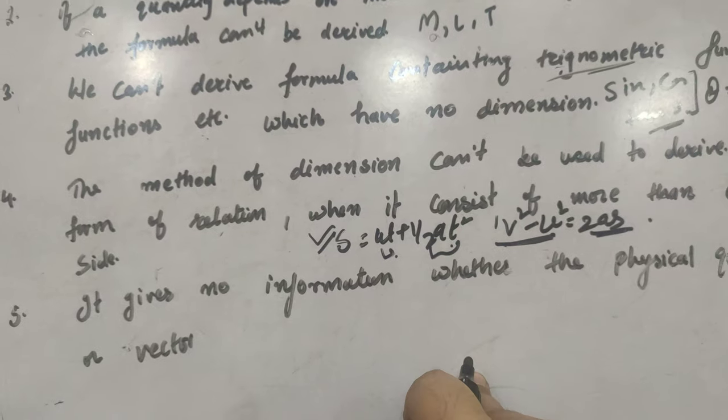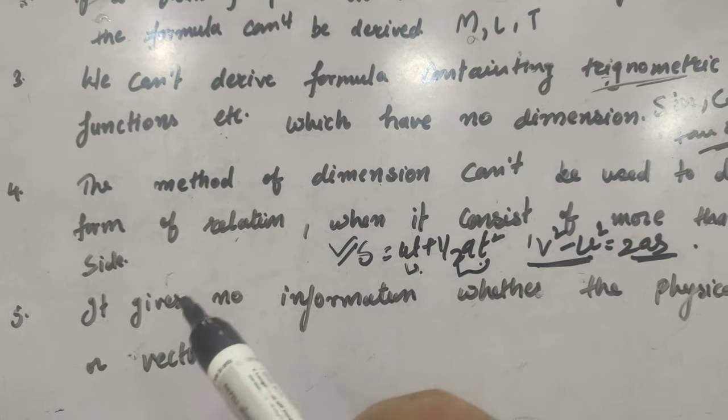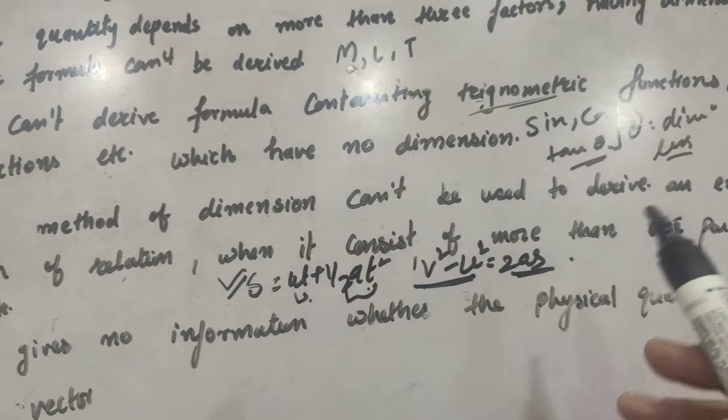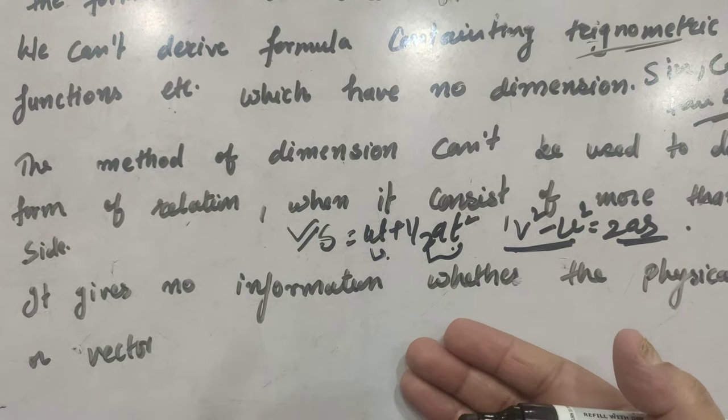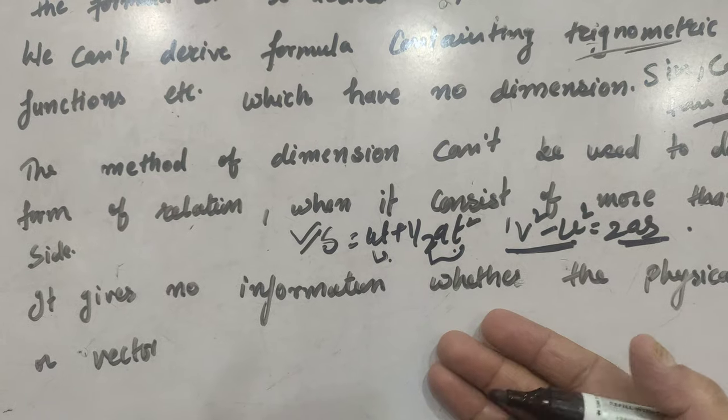Next, last one is, it gives no information whether the physical quantity is a scalar or vector. What we calculate, we derive the formula, we check the correctness,